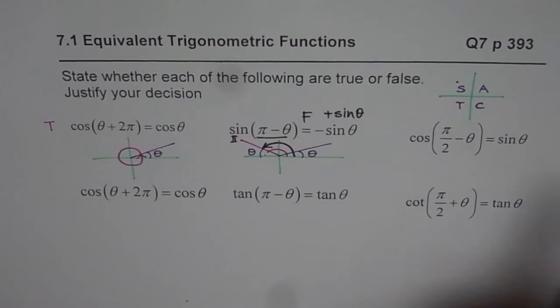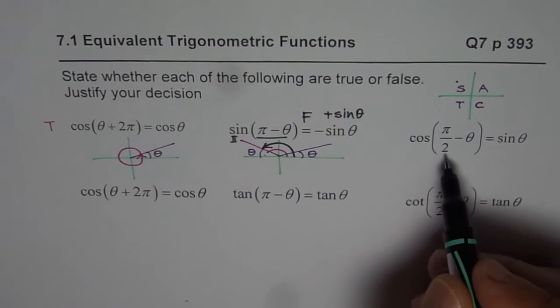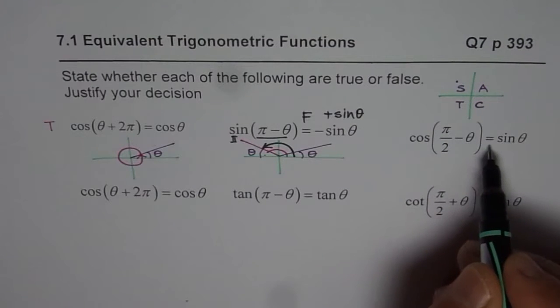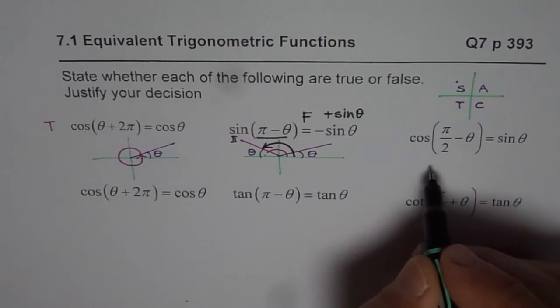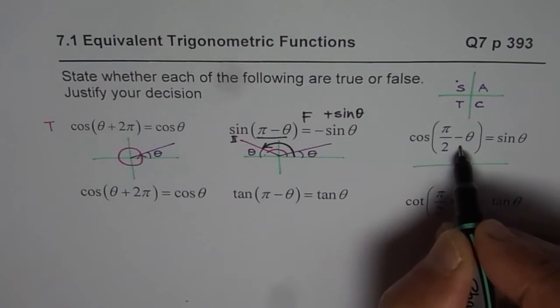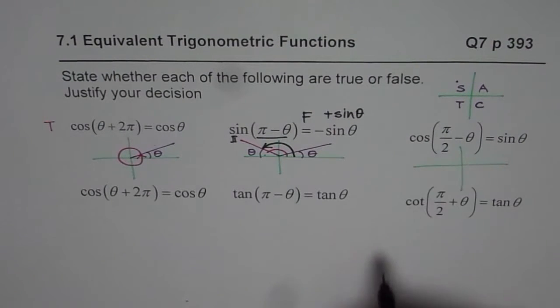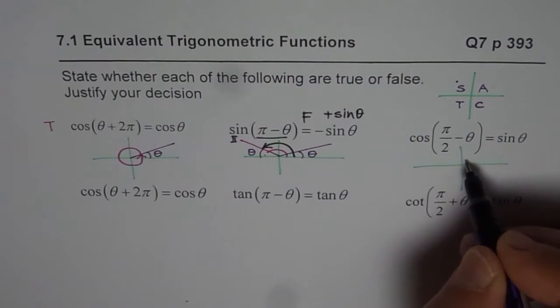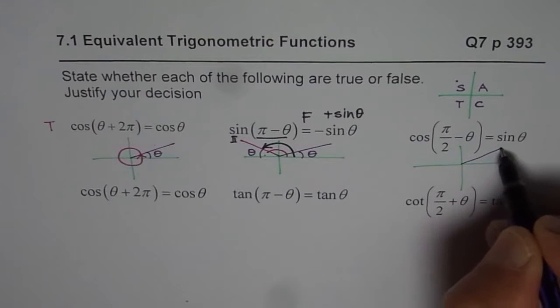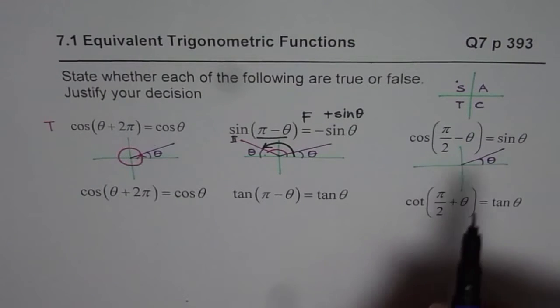Now let's take the next one. Here we have cos(π/2 - θ) = sin θ. Whenever we have π/2 or 3π/2, we are working with co-functions. Remember that. Again, to start with, always take theta as an acute angle. So let's say this is our theta.